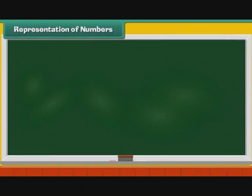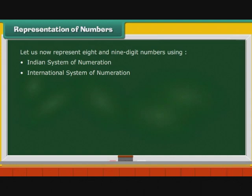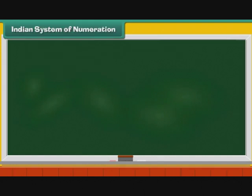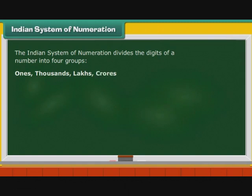Let us now represent eight and nine-digit numbers using the Indian system of numeration. The Indian system of numeration divides the digits of a number into four groups: ones, thousands, lakhs, and crores. Let us see how.